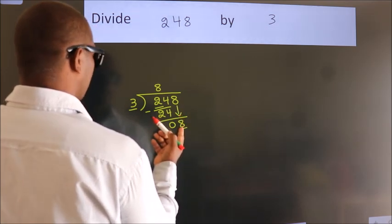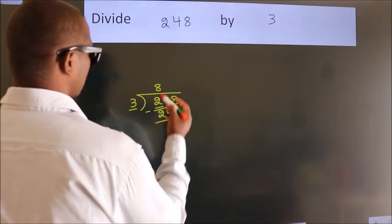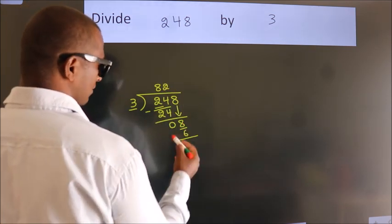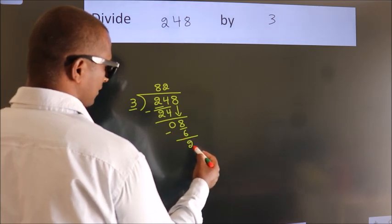A number close to 8 in the 3 table is 3 times 2, which is 6. Now we subtract. We get 2.